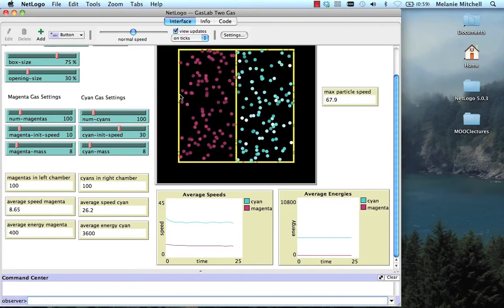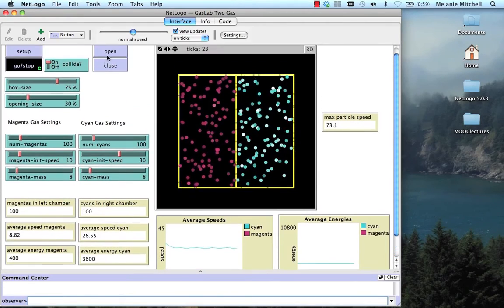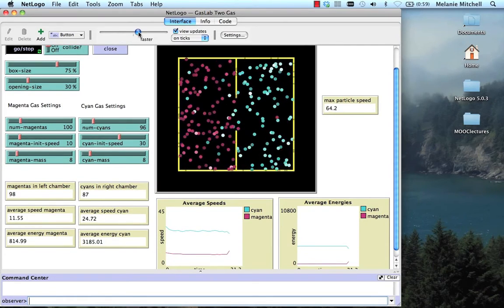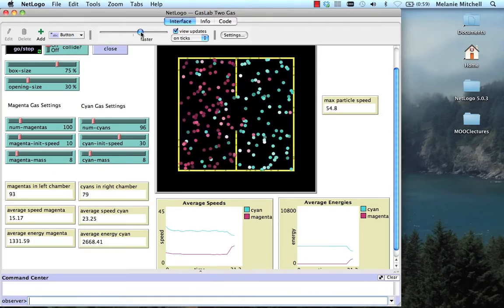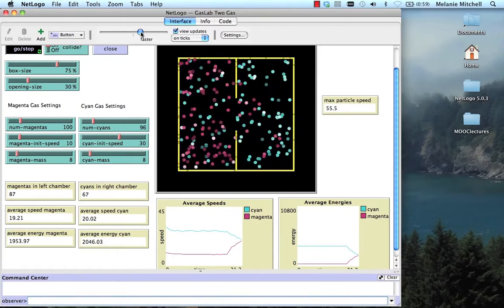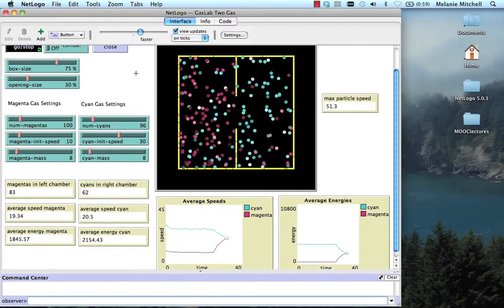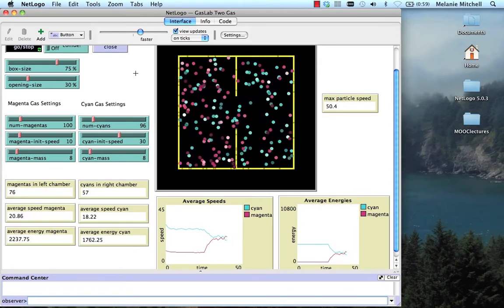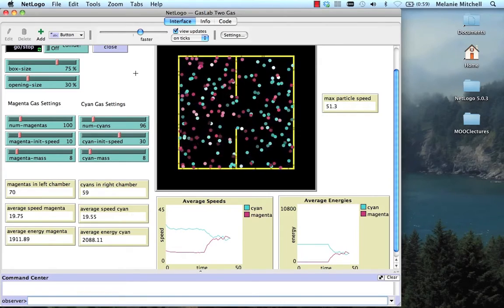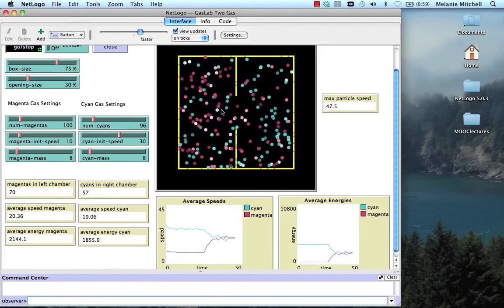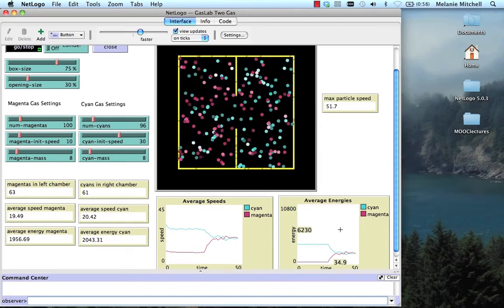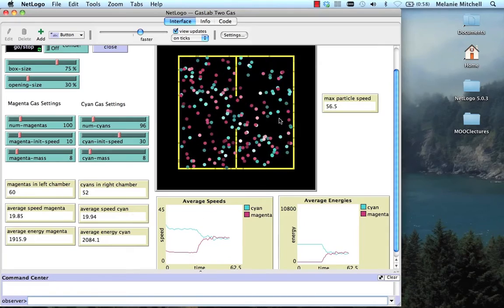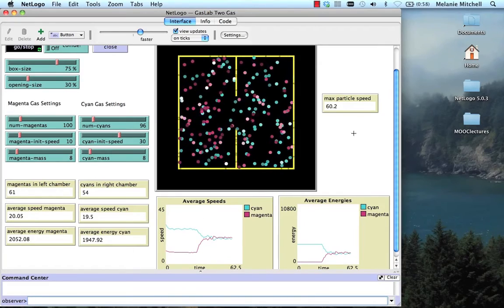But what if we allow them to mix by clicking on Open up here? Let's see what happens. And I'll speed this up a little bit. When they collide, they can lose energy and thus slow down. And so you can see, as we allow these molecules to just move according to the laws of physics in this frictionless gas, very quickly they start mixing the red and the blue particles. Their average speeds, their average energies become equal, and the whole system becomes very disordered.